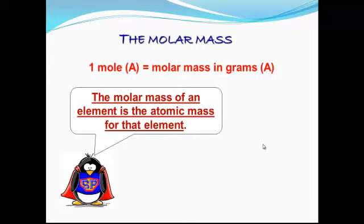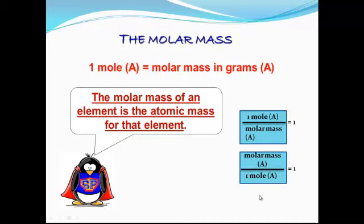This is a very important point: the molar mass of an element is the atomic mass for that element. If you go to any periodic table, you can find the atomic mass number for any particular element you're interested in, and that automatically becomes the molar mass of that element. The key point is to give you conversion factors. One mole of substance A divided by molar mass of A equals one, and vice versa.